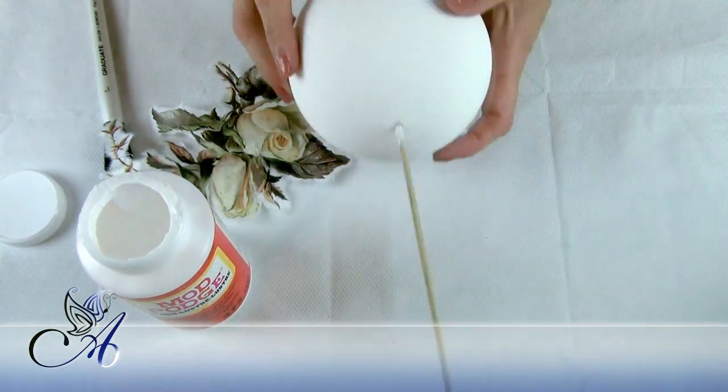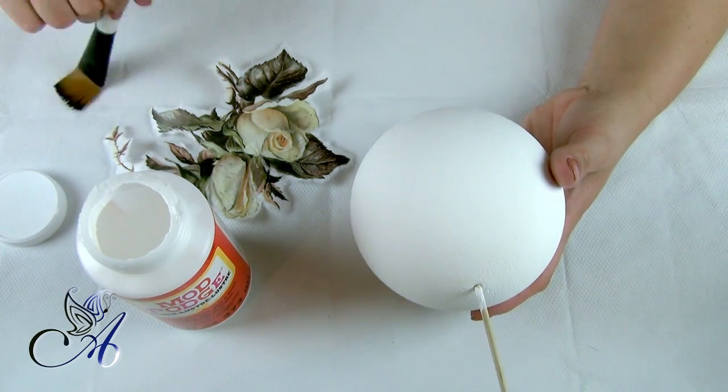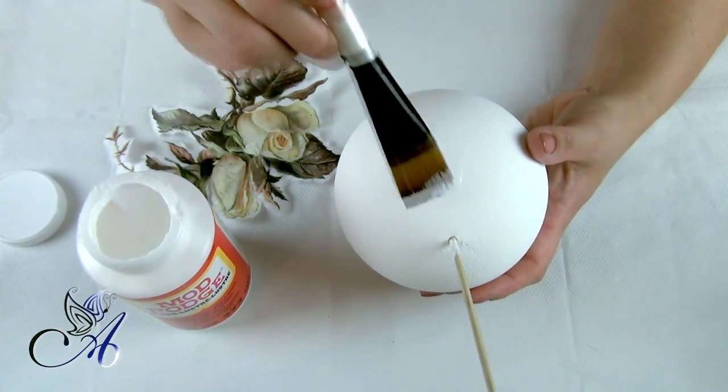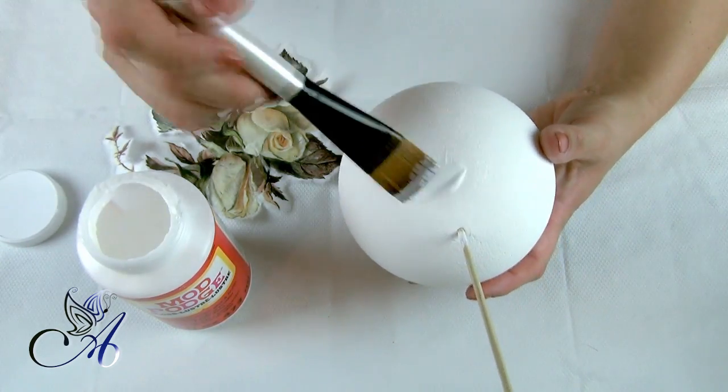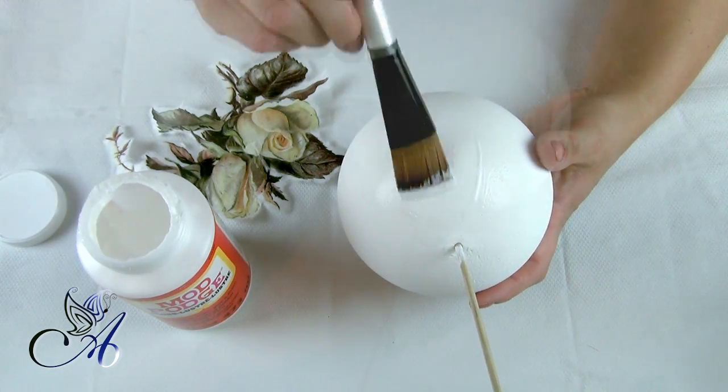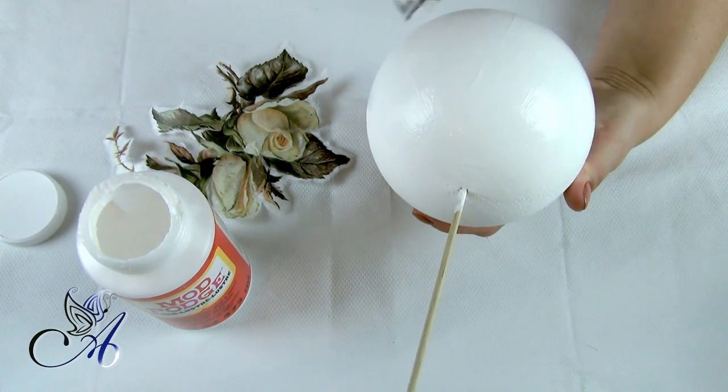You need to apply glue underneath as well as on top and stick each part separately, pressing your brush really hard to smooth any wrinkles appearing.